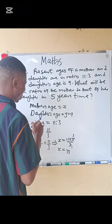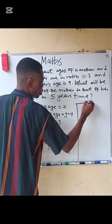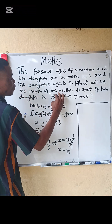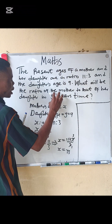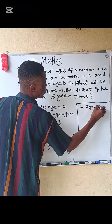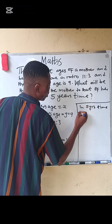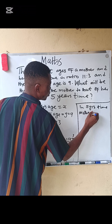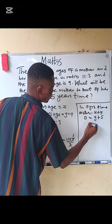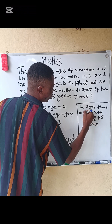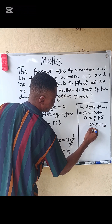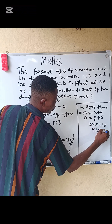The mother's age is 33. In five years time, we add five years to both ages. So the mother's age becomes x plus 5, which is 33 plus 5 equals 38. The daughter's age becomes y plus 5, which is 9 plus 5 equals 14.